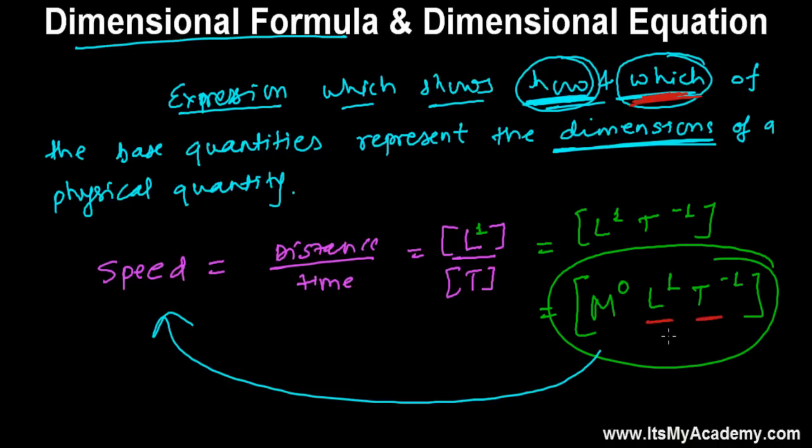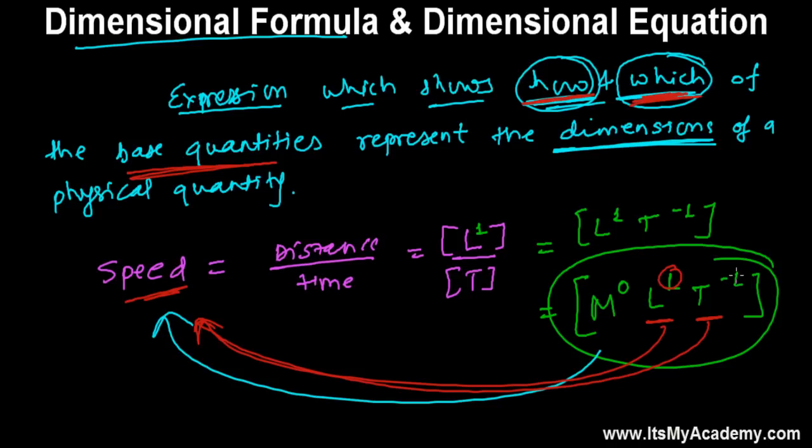These are the two fundamental physical quantities. These are the two base quantities which is making our derived or secondary physical quantities speed. And by how much? By dimension of 1 in length and by dimension of minus 1 in time. So this is called dimension formula.